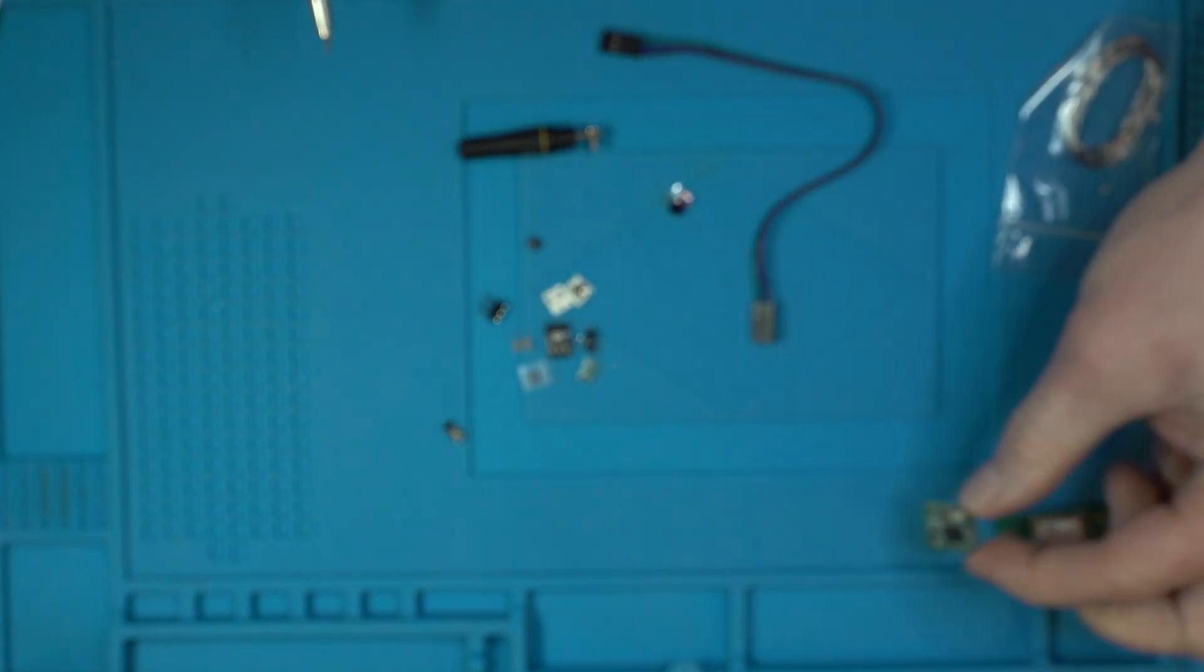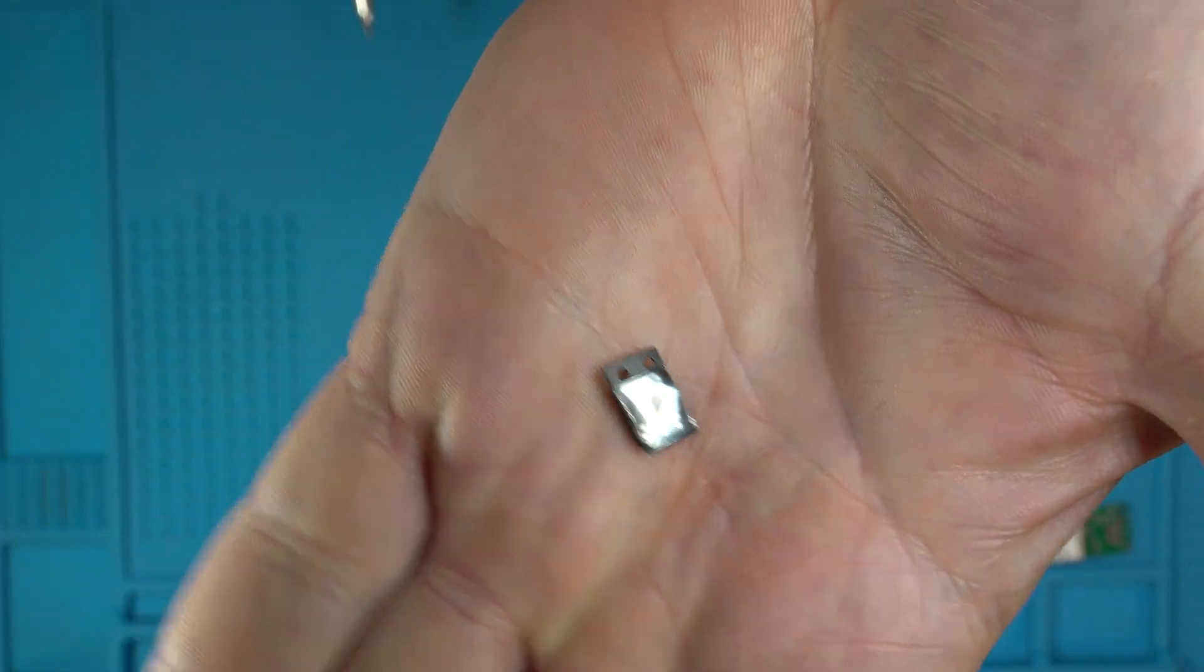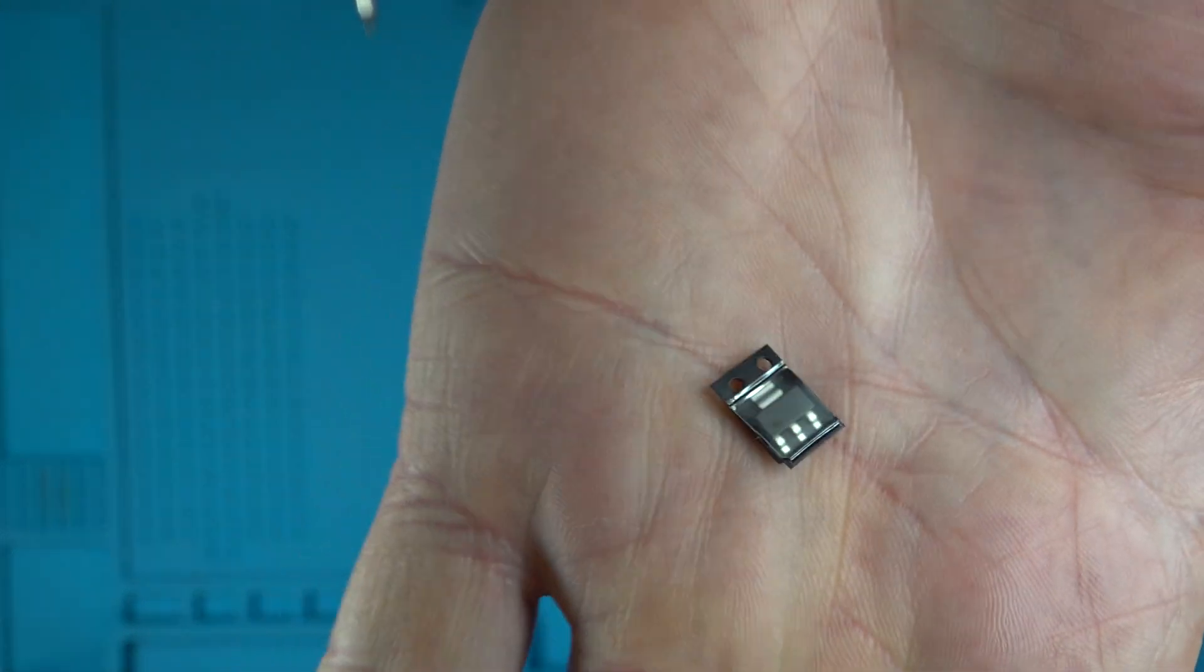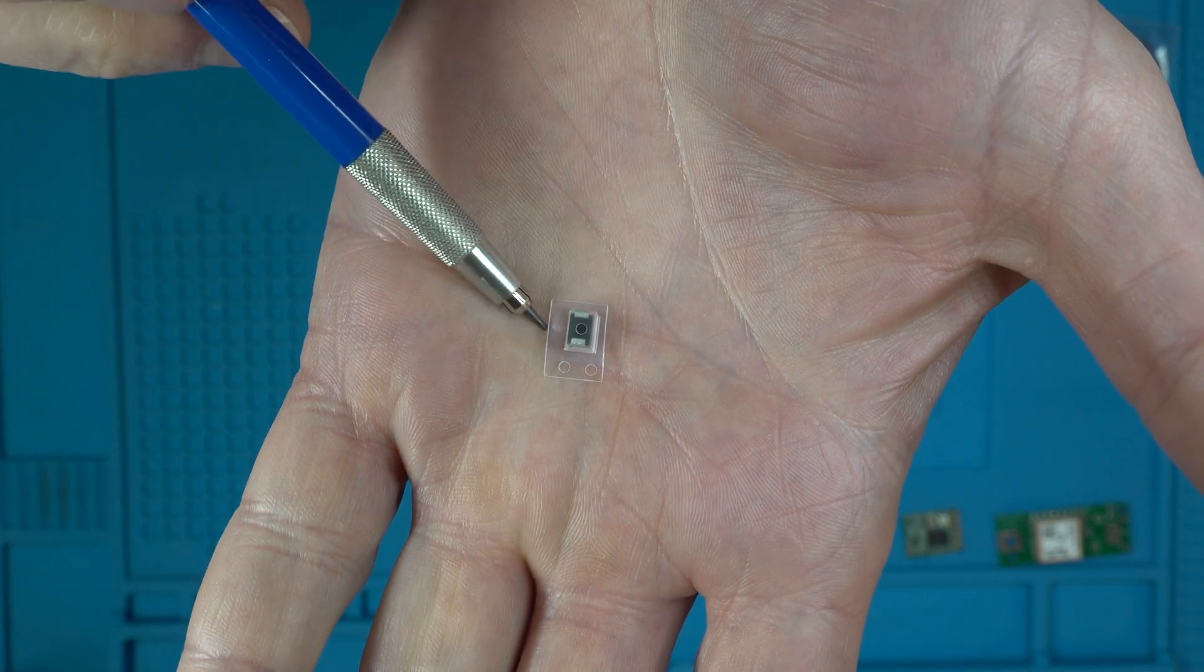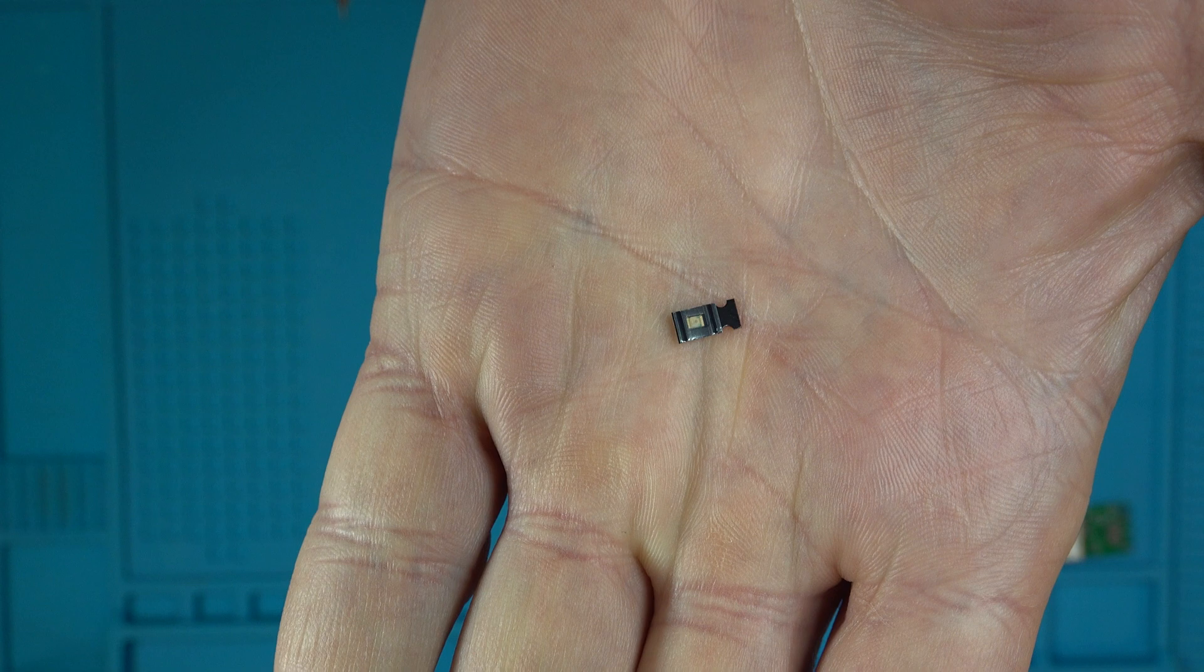Next up you're going to have a 3.3 volt voltage regulator. Pretty standard part on most of these devices. This is a diode. Then you have an LED.